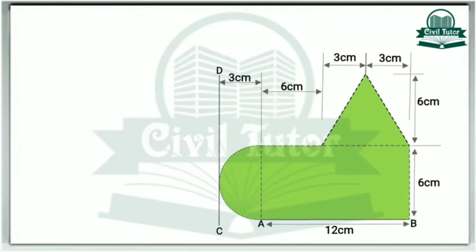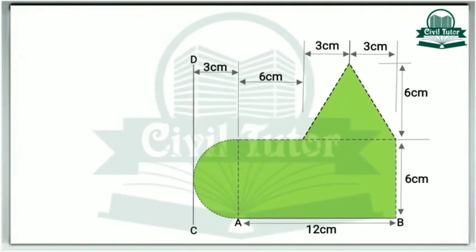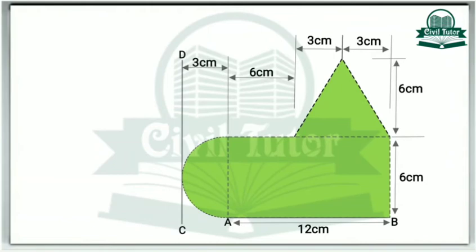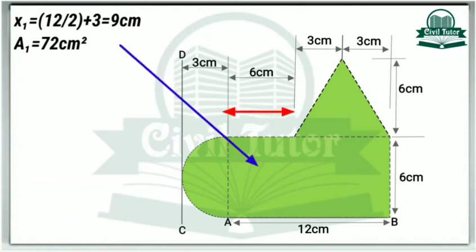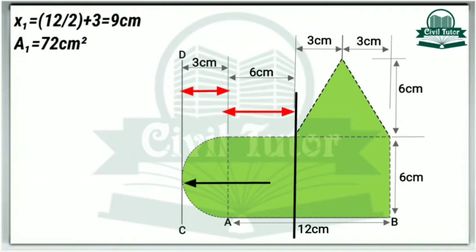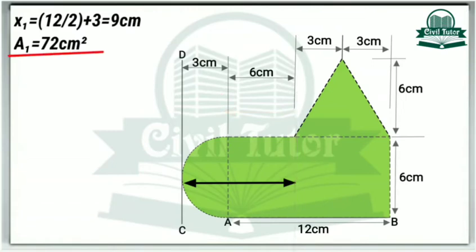Similarly for calculating X bar we will choose line CD as the reference line. Let X1 be the centroidal distance of area 1, which will be equal to the centroid of this rectangle: 12 centimeter divided by 2 plus this length 3 centimeter, equal to 9 centimeter. Area 1 as calculated earlier is equal to 72 centimeter square.